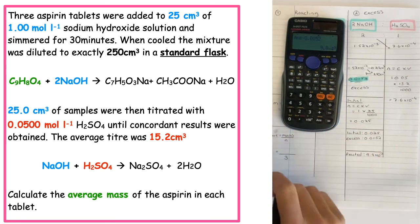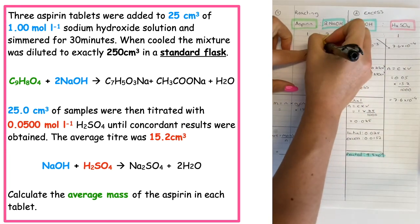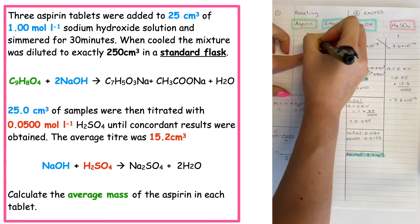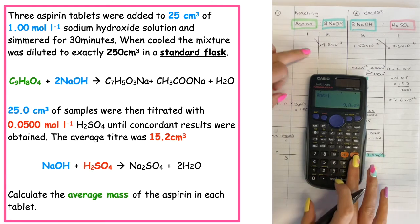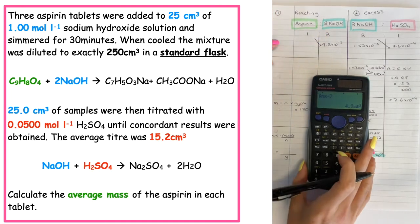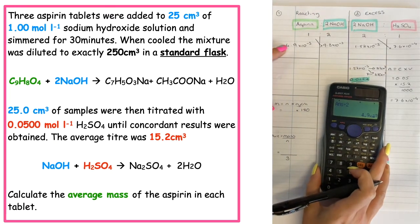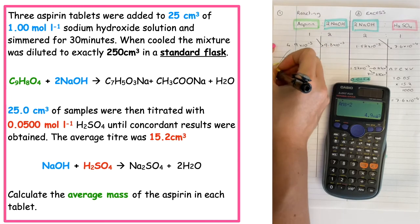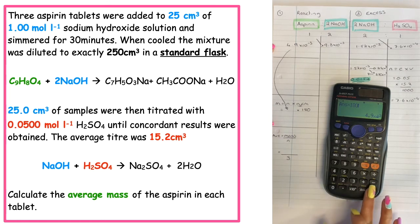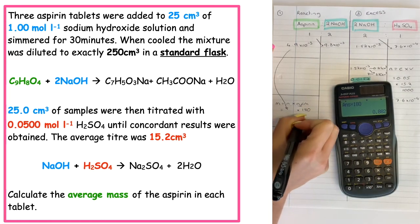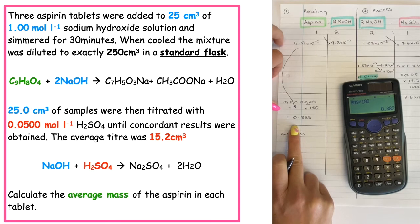We place 9.8 × 10⁻³ into the mole ratio and cross multiply to scale for the moles of aspirin — multiply by 1, divide by 2 — giving 4.9 × 10⁻³ moles of aspirin that reacted. Substituting into the mass equation and multiplying by the GFM of 180 gives a mass of 0.882 grams of aspirin.